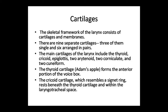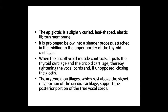The cartilages form the skeletal framework of the larynx, consisting of cartilage and membrane. There are nine separate cartilages: three single — the thyroid, cricoid, and epiglottis — and six paired: two arytenoid, two corniculate, and two cuneiform. The thyroid cartilage forms the Adam's apple and the anterior portion of the voice box. The cricoid cartilage is shaped like a signet ring and sits below the thyroid cartilage in the laryngotracheal space. The epiglottis is slightly curled.